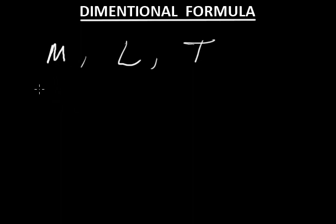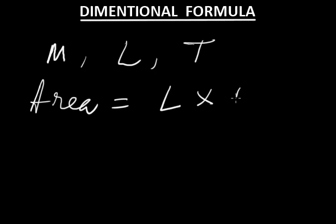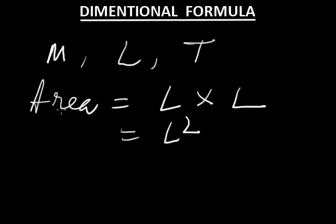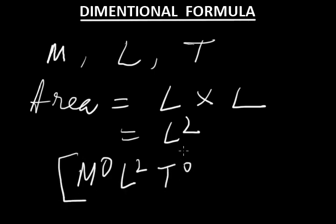For example, area. We know area equals length into length, that is L squared. So the dimensional formula of area is L squared. In the orthodox manner, M, L, and T are all used in a dimensional formula. If a quantity is not present, it is written as the zeroth power. So area is written as M⁰ L² T⁰, or in short form, L squared.